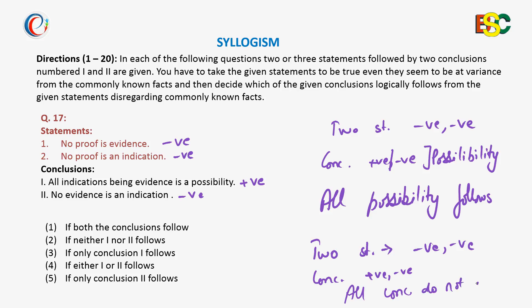So here straight away we will mark conclusion one follows, conclusion two does not follow. Why? Whenever we have a set of negative statements and the conclusion is whether positive or negative but with the case of possibility, all possibility conclusion follows.